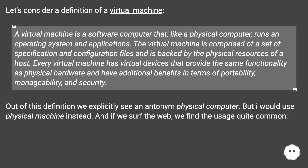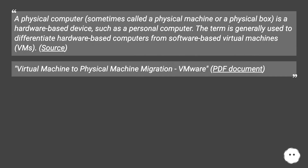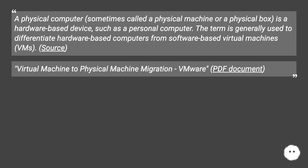If we surf the web, we find this usage quite common. A physical computer, sometimes called a physical machine or a physical box, is a hardware-based device such as a personal computer. The term is generally used to differentiate hardware-based computers from software-based virtual machines. Source: VMware's virtual machine to physical machine migration PDF document.